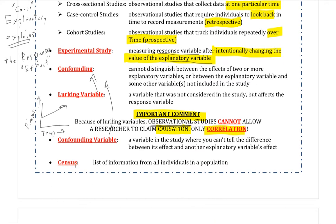A census is a list of information from all individuals in a population. This is basically where you didn't need to do a sample because you have all the information from the population already. For example, I can't really go to every single adult in Utah and ask them what brand of ice cream they like best — I'd instead find 50 hopefully random individuals in Utah and ask them, and that would be a sample, not a census.